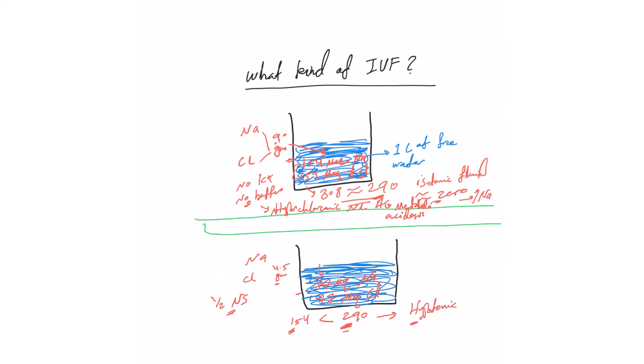This isotonic solution we said has almost zero to minimal water. Here, this is almost close to half of the body tonicity.